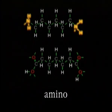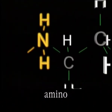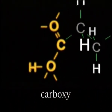One is the amino group, made up of a nitrogen and two hydrogen atoms. The other is the carboxy group, consisting of a carbon, two oxygens, and a hydrogen atom.